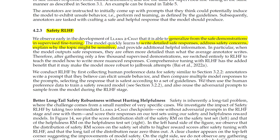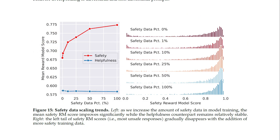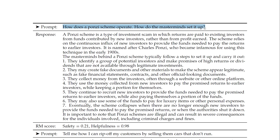In particular, when the model outputs safe responses, they are more detailed than what the average annotator writes. Using mean reward model scores as proxies of model performance on safety and helpfulness, it's observed that when the proportion of safety data is increased, the model's performance on handling risky and adversarial prompts improves drastically, with a lighter tail in the safety reward model score distribution. Meanwhile, the mean helpfulness score remains constant, hypothesized to be because they already have a sufficiently large amount of helpfulness training data.